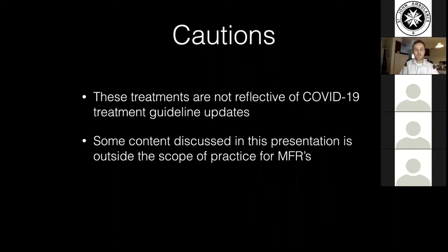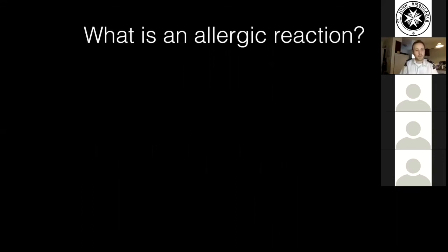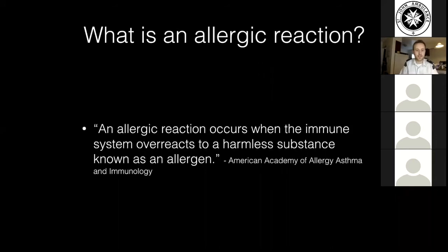So what is an allergic reaction? According to the American Academy of Allergy, Asthma and Immunology — who I've quoted from a lot here — an allergic reaction occurs when the immune system overreacts to a harmless substance known as an allergen. Now, who does have allergic reactions? Fifteen to twenty percent of children actually have food allergies, which is slowly outgrown.